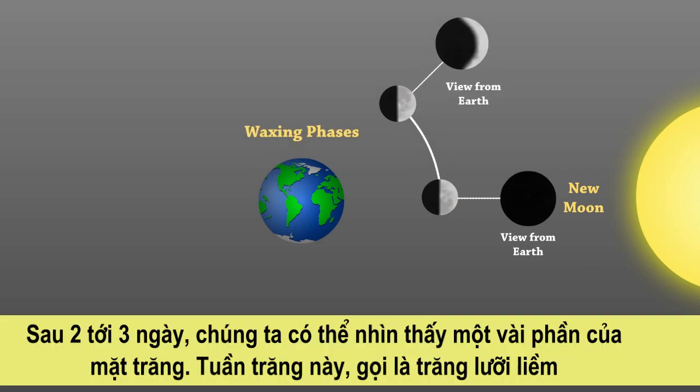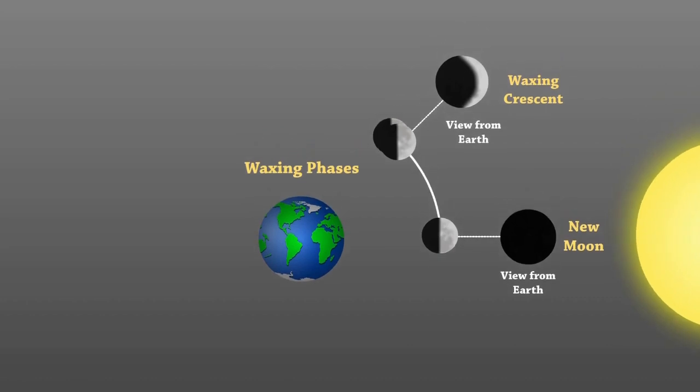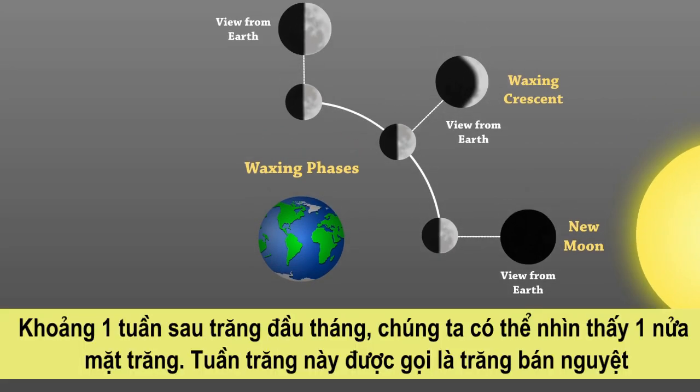After two to three days, we can see some part of the moon. This phase is called the waxing crescent. About a week after the new moon, we can see half of the moon. This phase is called the waxing gibbous.